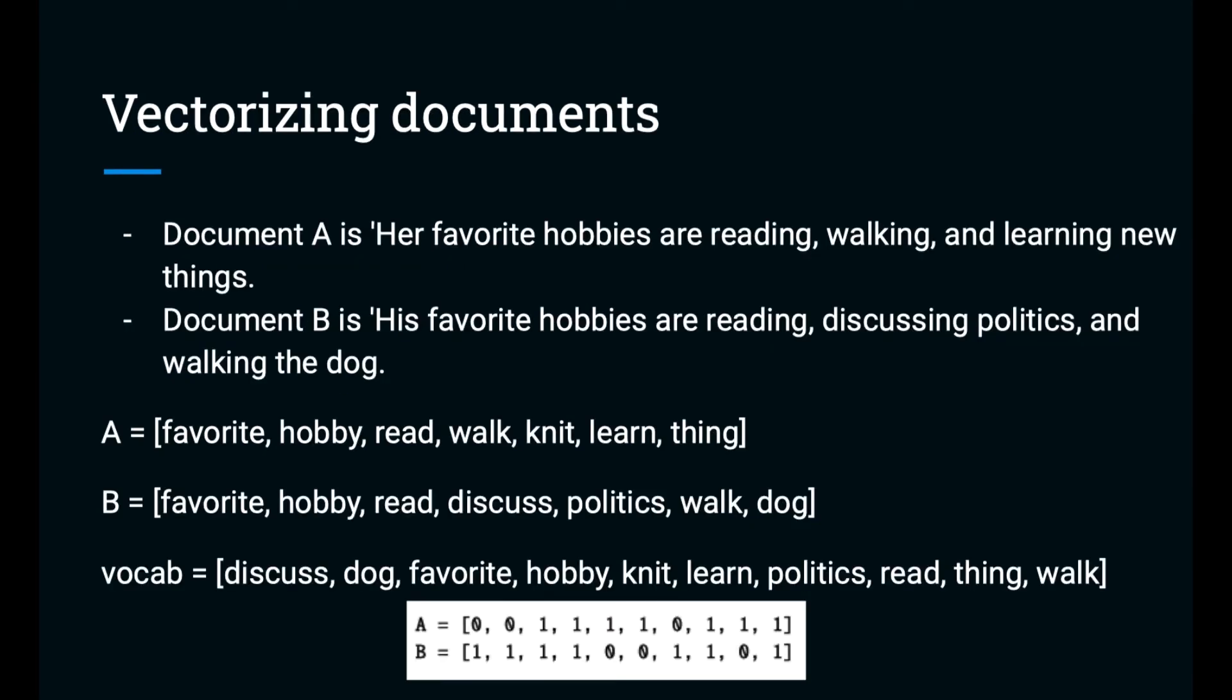Let's look at how we could vectorize documents. Let's say that document A is her favorite hobbies are reading, walking, and learning new things. And document B is his favorite hobbies are reading, discussing politics, and walking the dog.